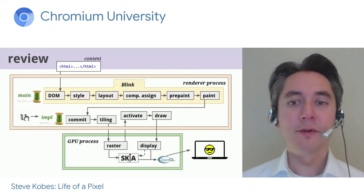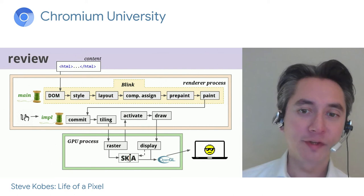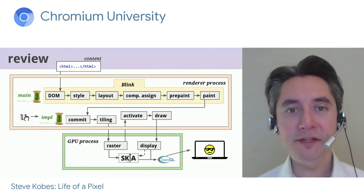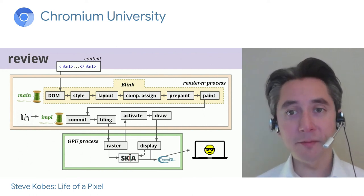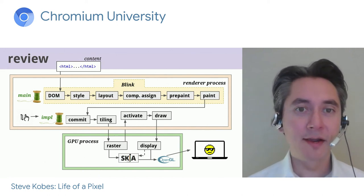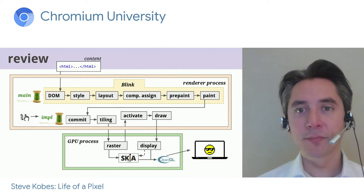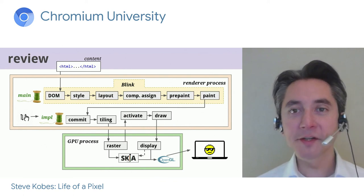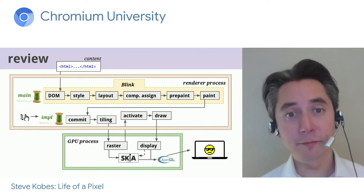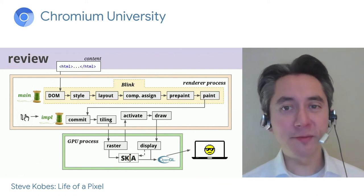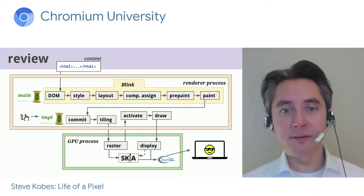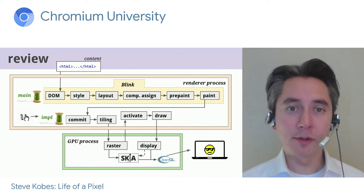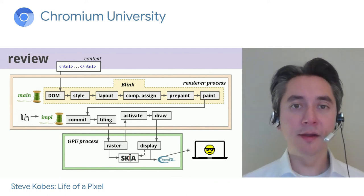To recap: we took web content, built a DOM tree, resolved styles, updated layout, assigned compositing layers, generated property trees, painted the layers, committed the layers with paint ops and property trees to the compositor thread, broke the layers into tiles, rastered the tiles using Skia, copied the pending tree to the active tree, generated draw quads, submitted the quads to viz, and displayed them as pixels on screen. Most of the pipeline runs in the renderer; raster and display run in the GPU process. The core rendering stages — DOM, style, layout, paint — are in Blink code on the main thread, but input events for scrolling and zooming can update layers on the compositor thread while the main thread is busy.